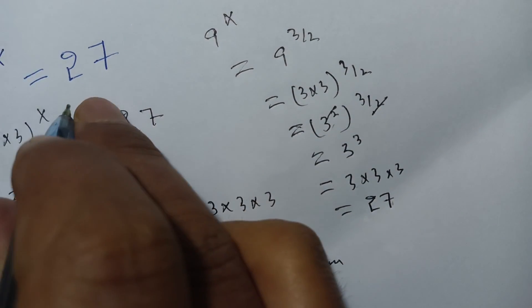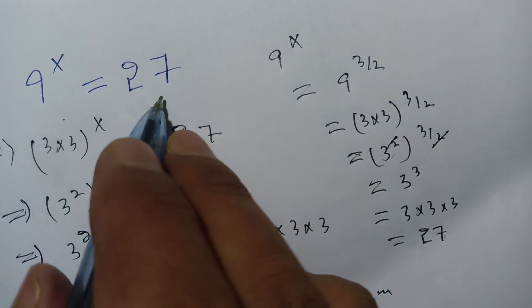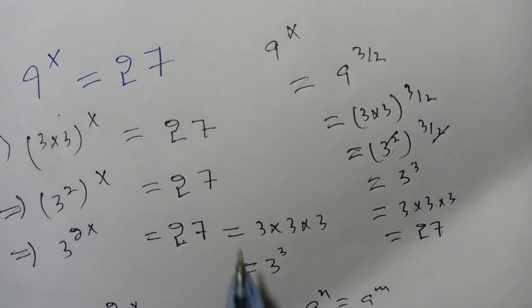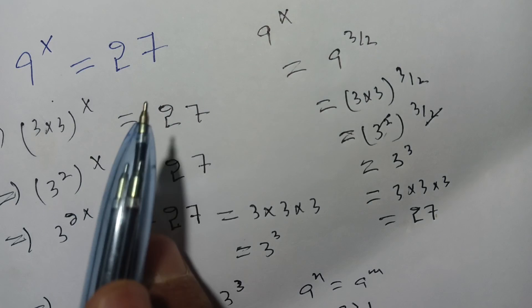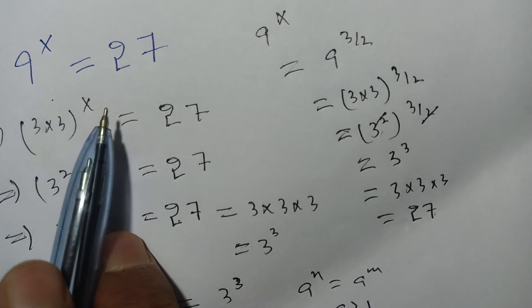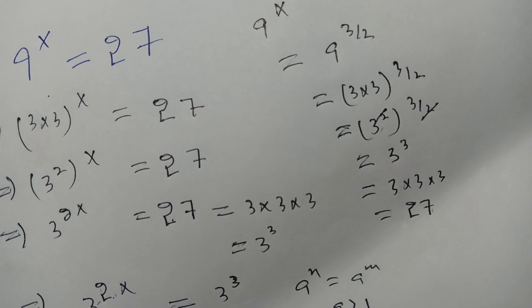Which is equal to our right-hand side, means that our left-hand side is equal to right-hand side. x is equal to 3 by 2 is our correct solution of this equation. If you are new here, you can subscribe our channel for more informative videos. See you in the next video, bye!